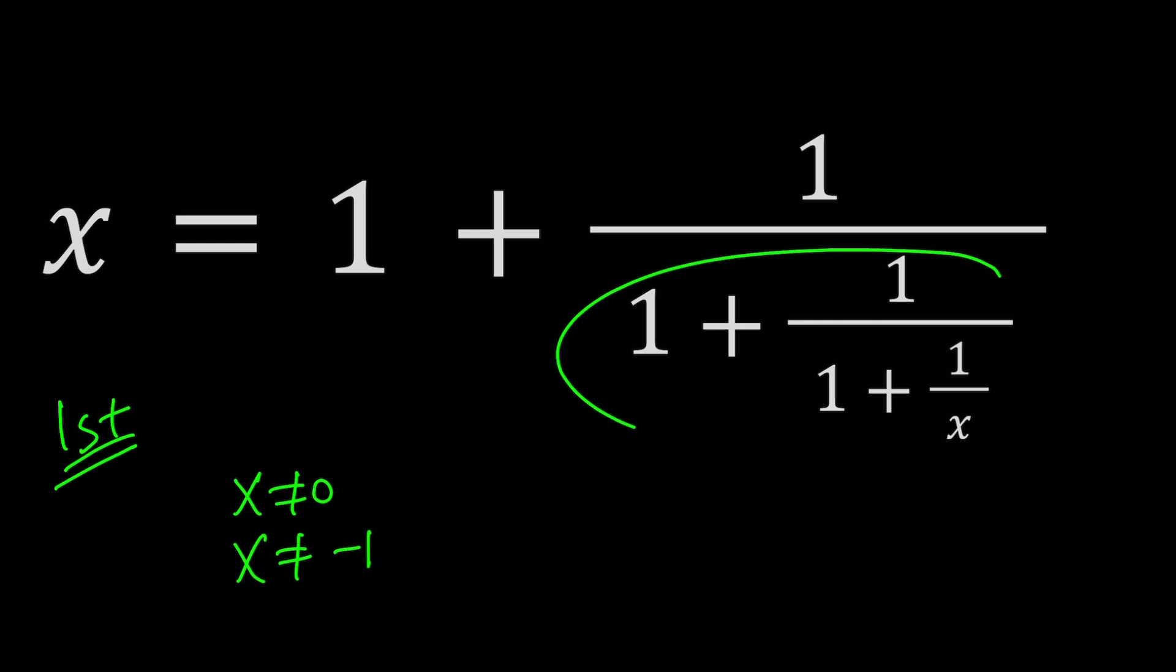Basically, I don't want any of these denominators to be 0. I don't want this to be 0 either. But that means that this should not be negative 1, which means this should not be negative 1, which means this should not be negative 2, which means x should not be negative 1 half either. So continue in this manner, you're going to get a lot of exclusions. So we need to be careful about those.